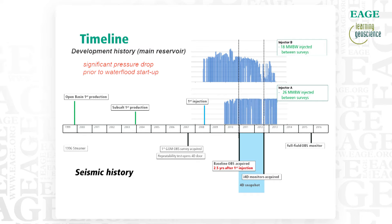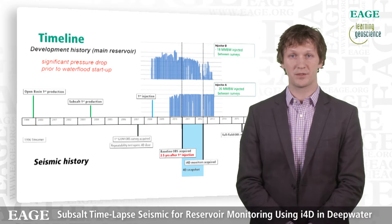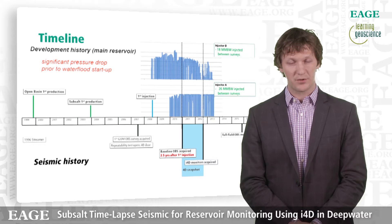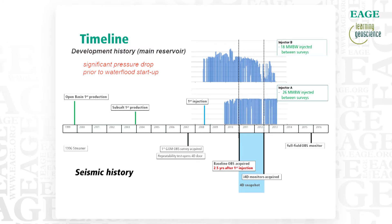In 2007, Shell conducted the first Gulf of Mexico ocean bottom sensor survey at a sister field. During this survey, we conducted a 4D repeatability test that demonstrated that in the Gulf, using nodes, we can achieve good 4D repeatability. This gave us confidence that we'd be able to monitor the water flood at this sister field successfully.